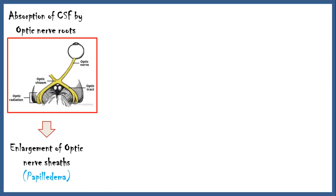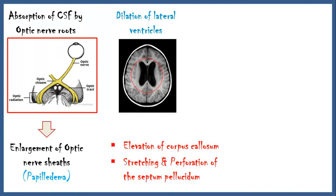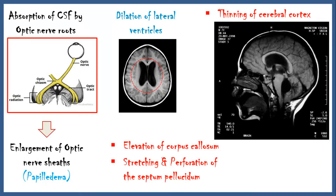When CSF accumulates in the subarachnoid space, excess fluid is absorbed by the optic nerve roots, which causes enlargement of the optic nerve. This condition is known as papilledema. Due to the increased CSF volume, ventricles get dilated. Dilation of lateral ventricles causes elevation of the corpus callosum, stretching and perforation of the septum pellucidum, and thinning of the cerebral cortex. This MRI section demonstrates the dilation of lateral and fourth ventricles due to the increased volume of CSF, and you can clearly see the elevation of the corpus callosum.